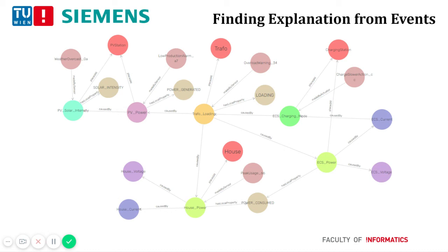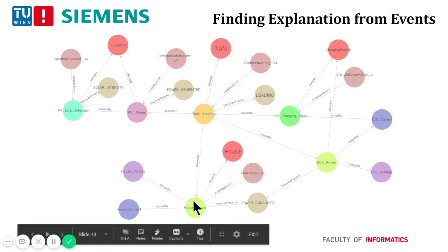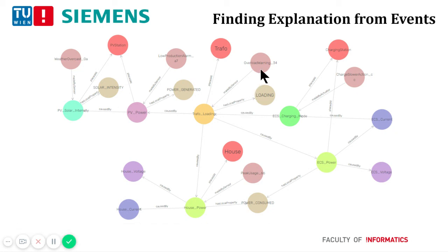Once relationships between devices are inferred, they are used to find an explanation for an event associated with a device. In this example, the event is the charging slower action, shown as a brown circle, associated with the charging mode actuator in the charging station. By tracing the 'caused by' relationship, we see that the loading sensor in the transformer is associated with an overload warning event. Tracing further, we can say that the slow charging event is caused by the overload warning, low power production in the PV due to cloudy weather detected by the solar intensity sensor, and peak consumption usage in the house.